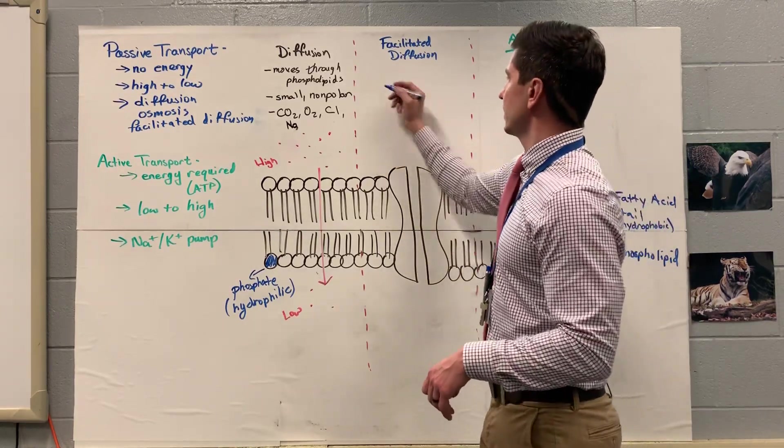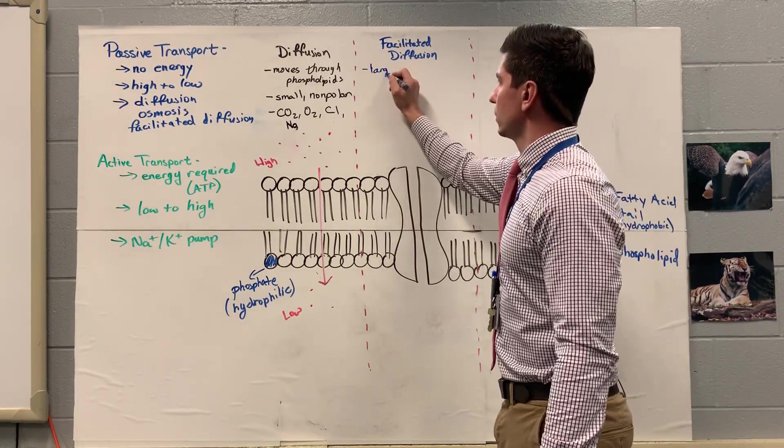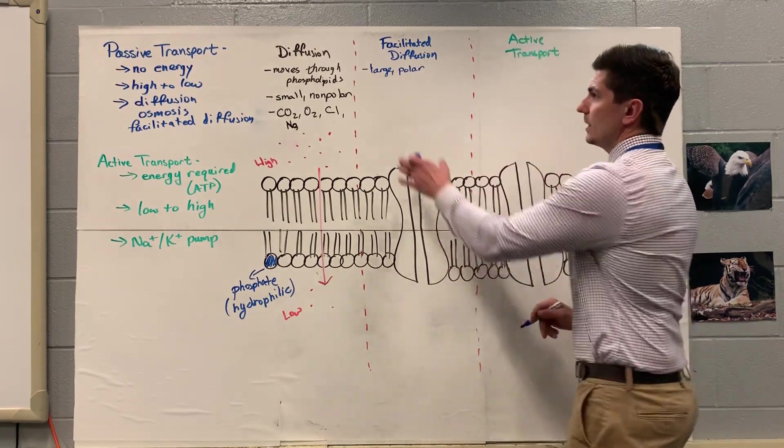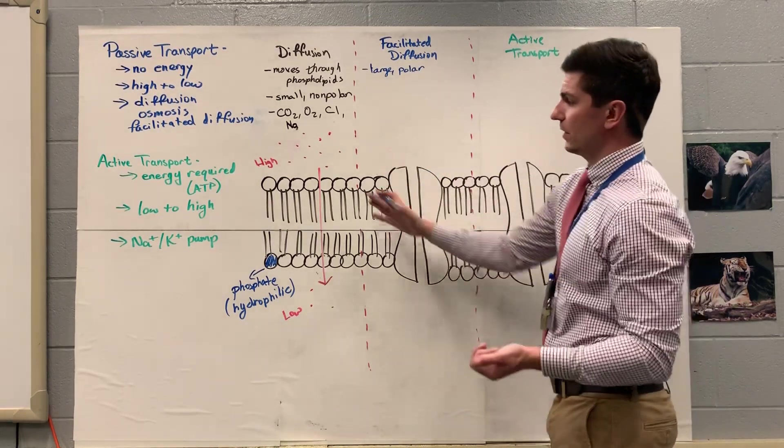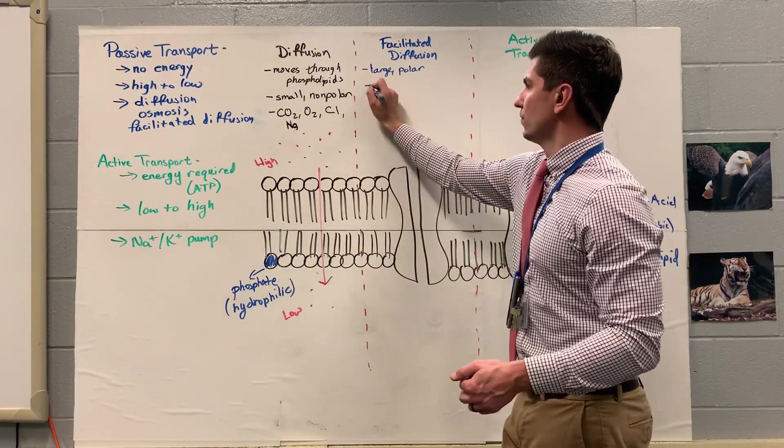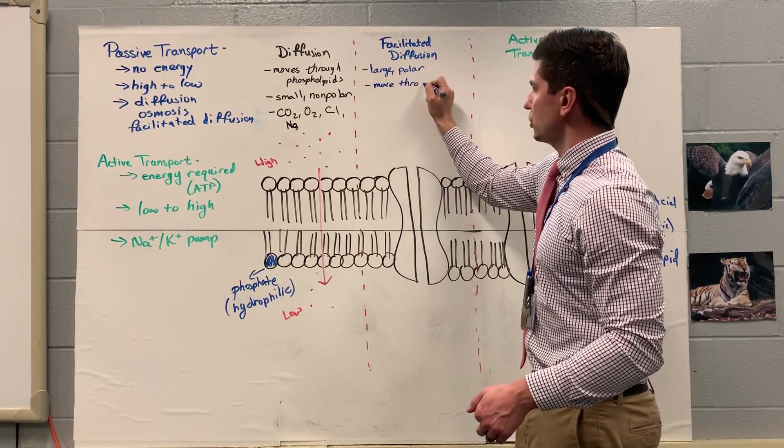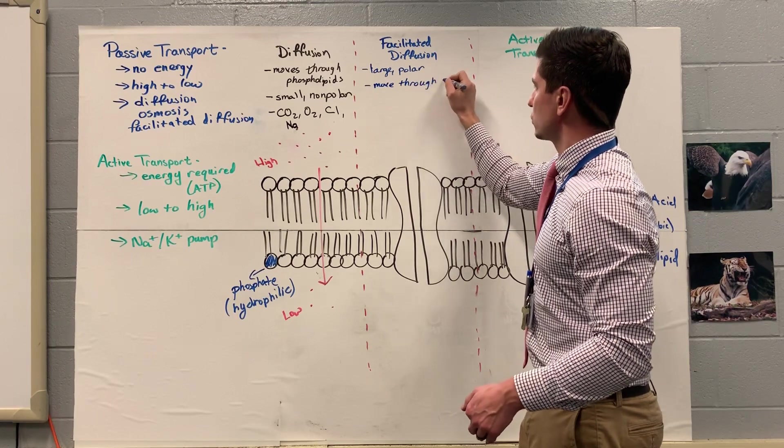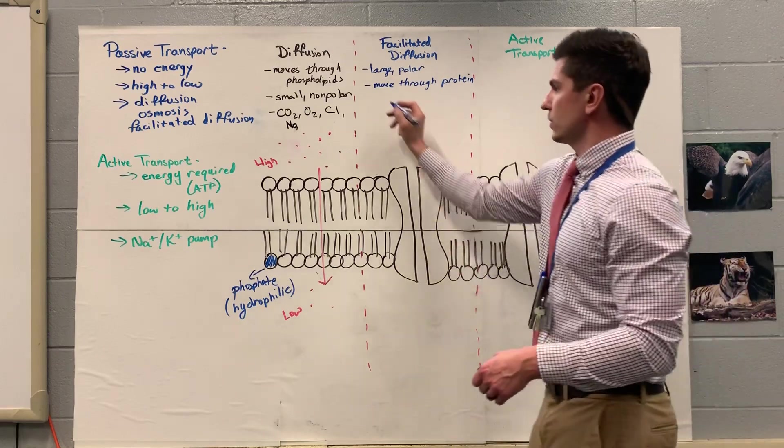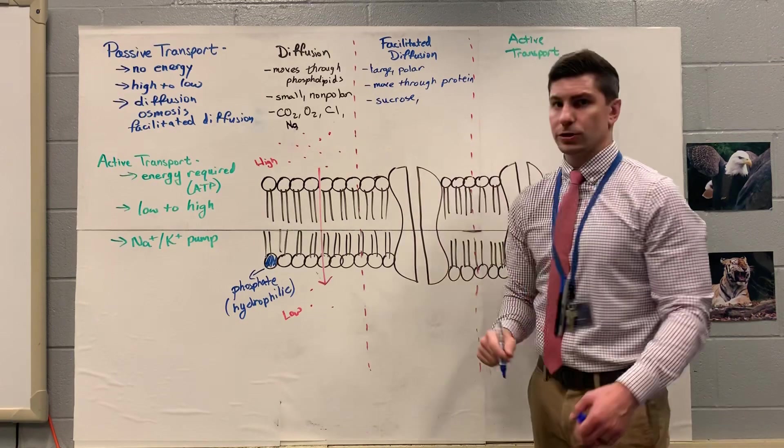Our second type, facilitated diffusion. These are going to be a little bit bigger. So they're going to move larger polar molecules. So these large polar molecules, they're much too big to fit right through the phospholipids like diffusion. So given that they can't move through the phospholipids, they're going to move through a channel protein. I'll just write protein here. So there's our channel protein there. It's going to move things like sucrose. A little bit larger. It's a carbohydrate.